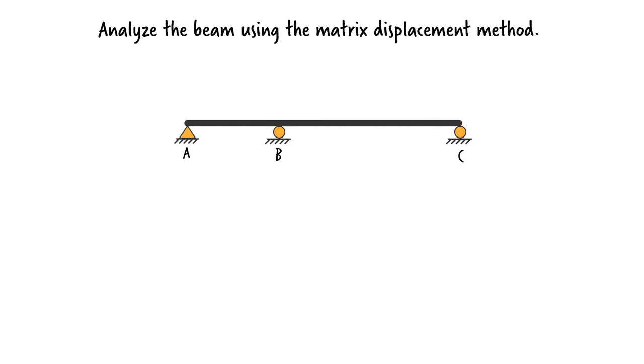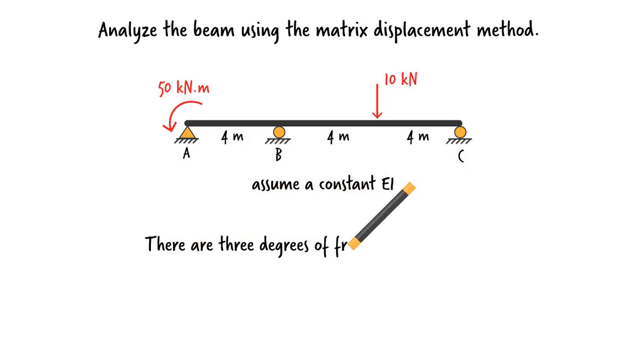Here we want to analyze a continuous beam using the displacement method. The beam is resting on a pin and two rollers, so it has three degrees of freedom: rotation at A, rotation at B, and rotation at C.